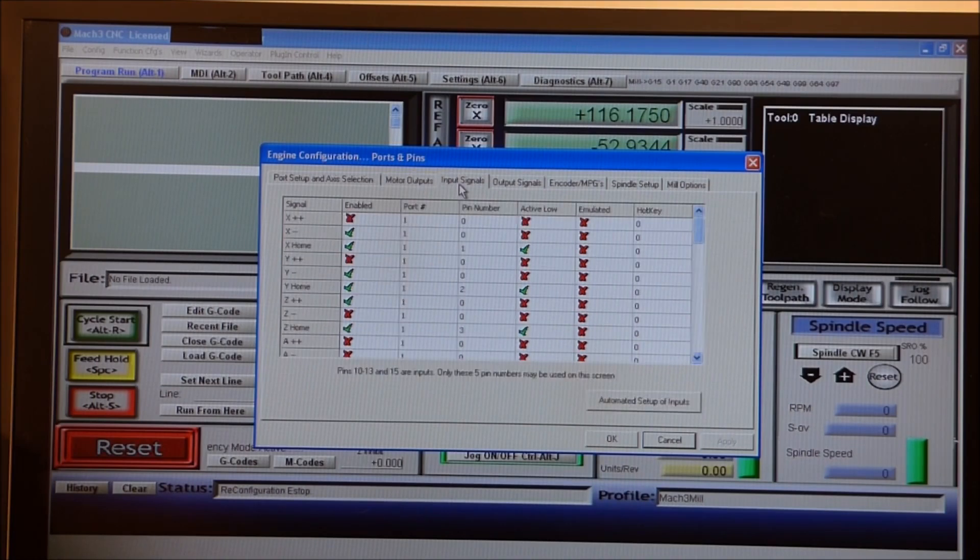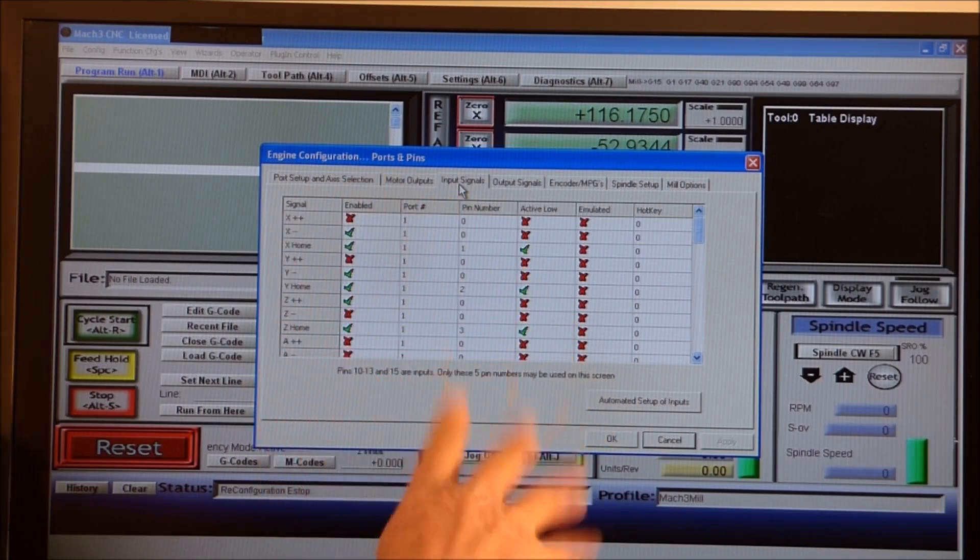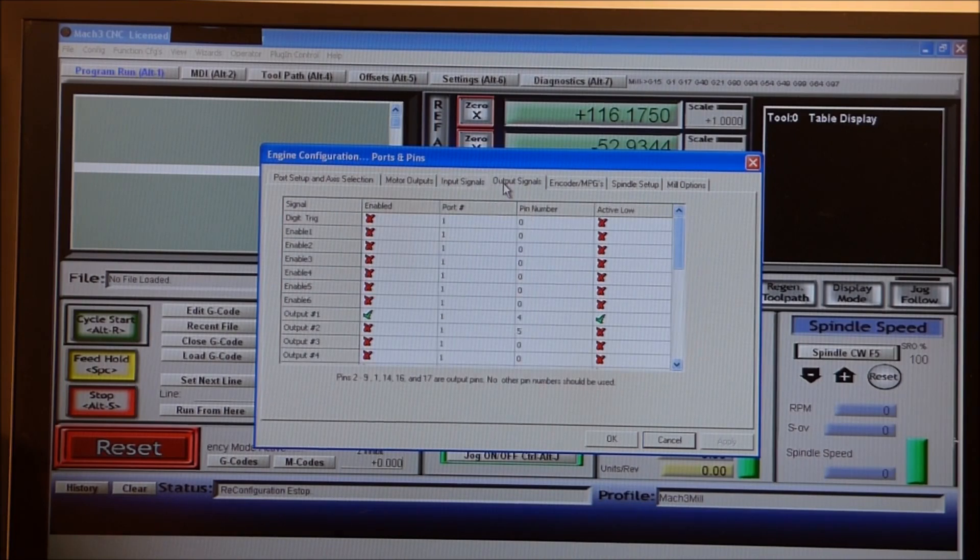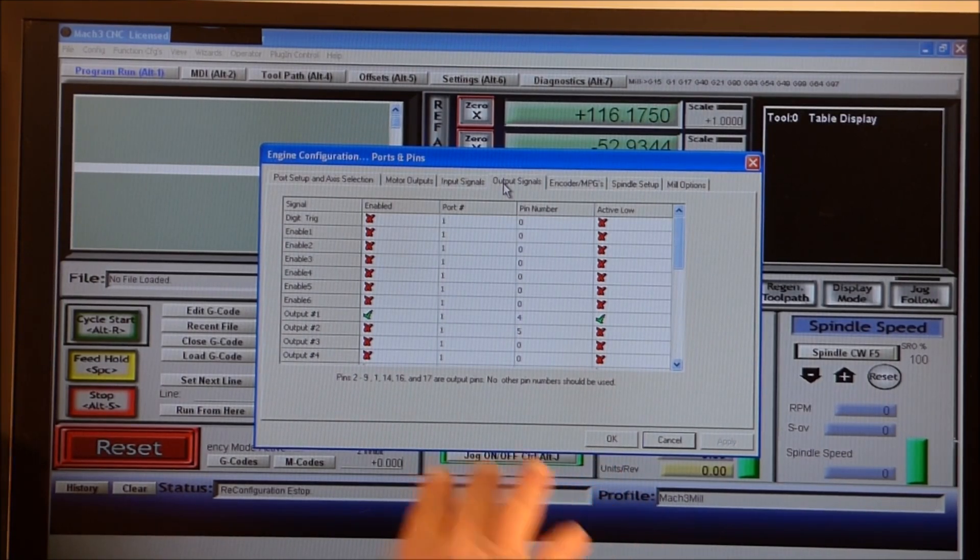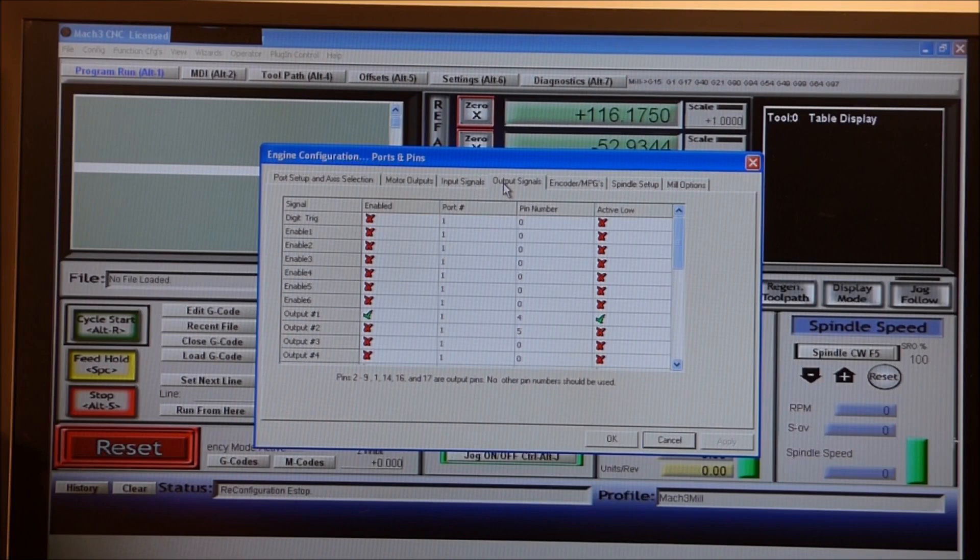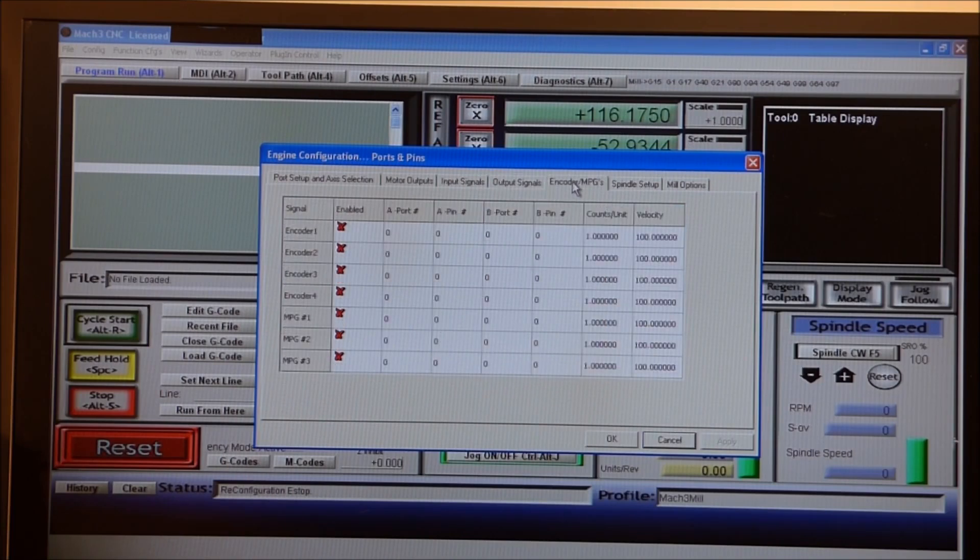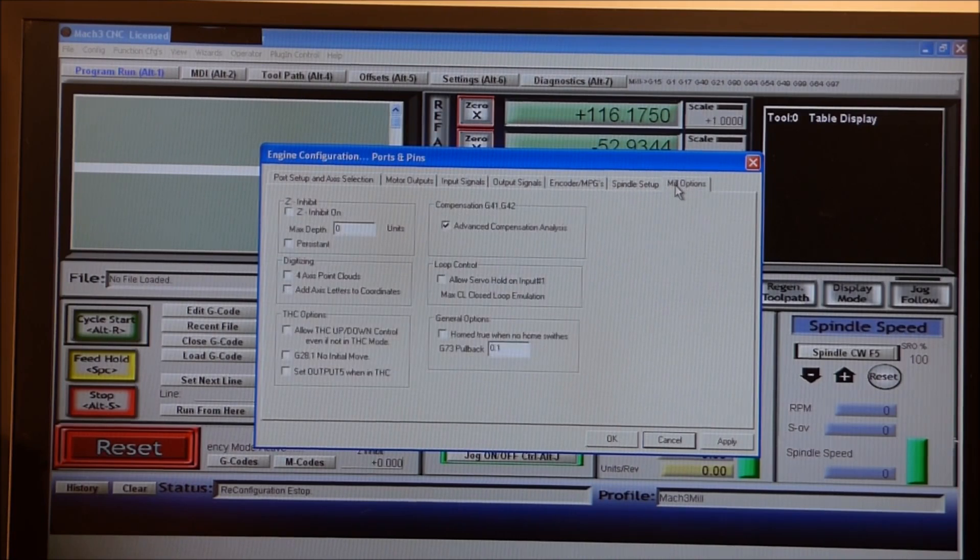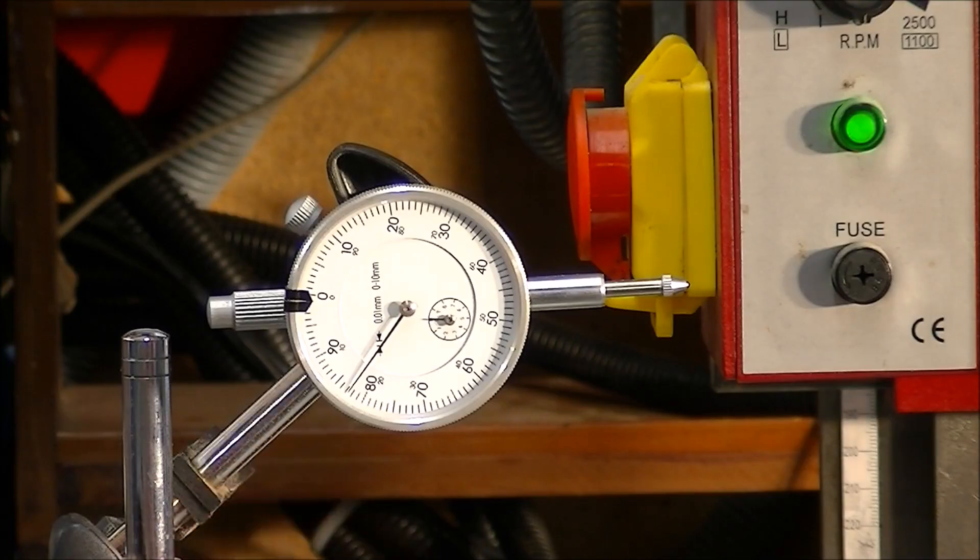Input signals - this is quite a normal setup. You can freeze frame this and take the information yourself. Output signals - this is the minimum that you should have. This is relating to an e-stop and you really don't want to bother about anything like spindle setup. That's the bare essentials that you would need.